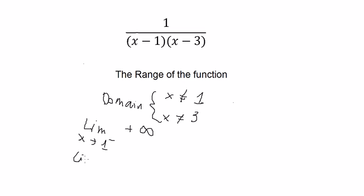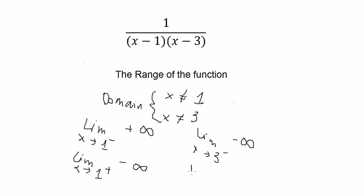If x approaches to number 1 from the positive side, you get about negative infinity. When x approaches to number 3 from the negative side, you get about negative infinity. And for the last one, you get about positive infinity.